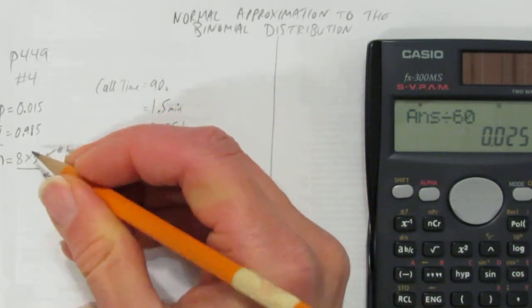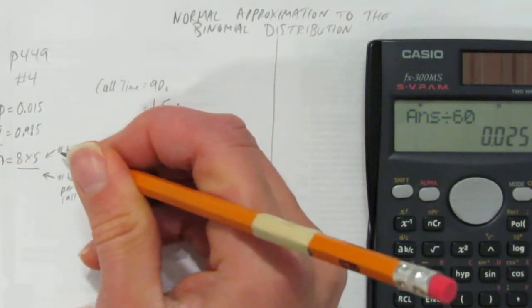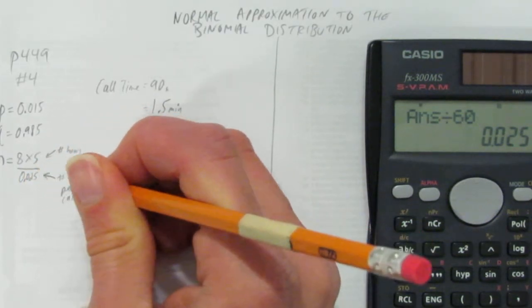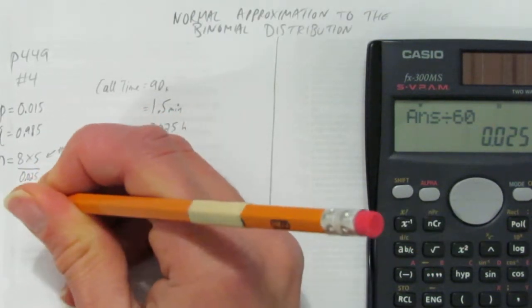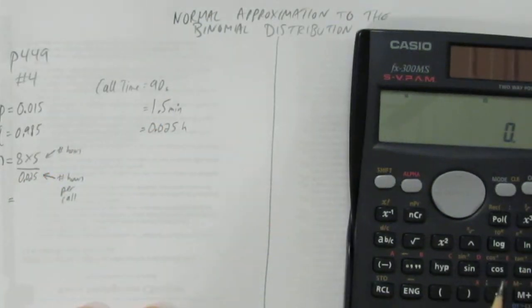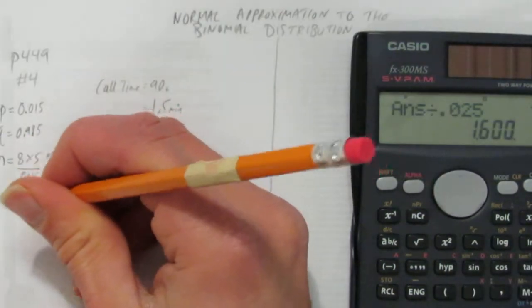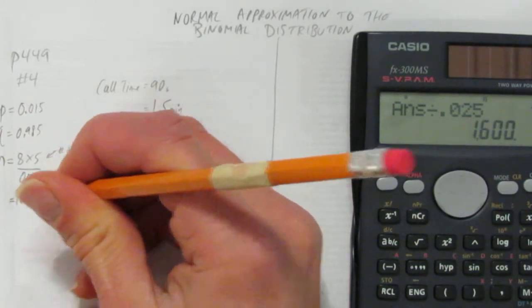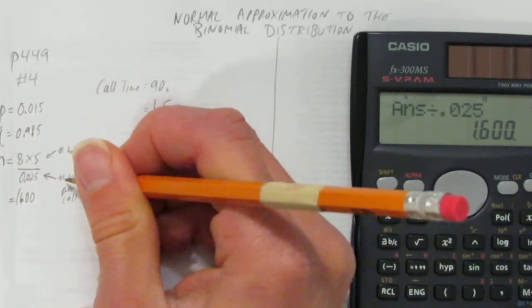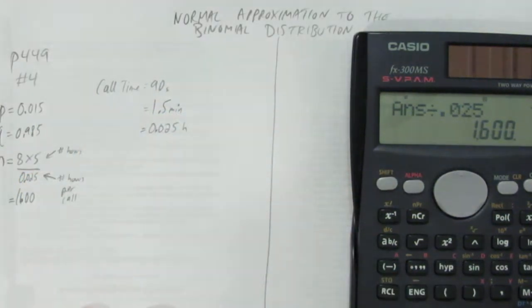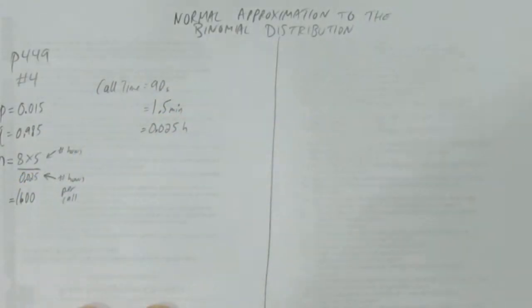So we can figure out his number of calls by doing number of hours, 40, divided by 0.025, the number of hours it takes to make a call. So what's 8 times 5, 40, divided by 0.025, and we get 1,600 calls. That is, we figured out by taking his hours and divide by the number of hours each call is, we know he makes, on average, 1,600 calls per week.